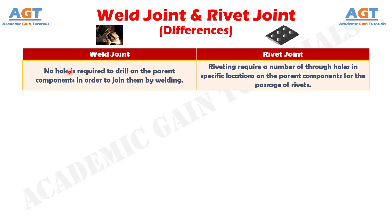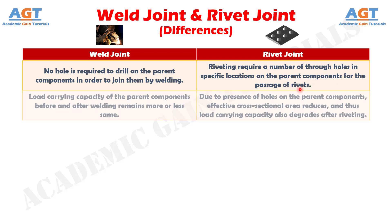Difference number 1: no hole is required to drill on the parent components in order to join them by welding, whereas riveting requires a number of through holes in specific locations on the parent components for the passage of rivets. Number 2: load carrying capacity of the parent components before and after welding remains more or less the same, whereas due to presence of holes on the parent components,